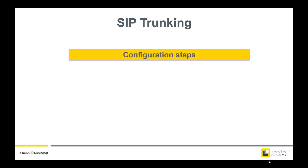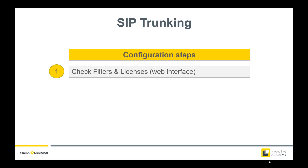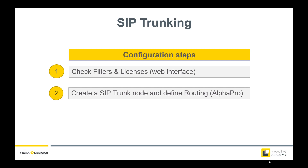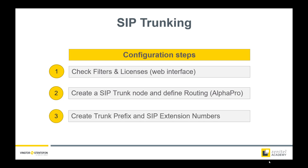There are three major configuration steps. First, we need to check the filter settings and the presence of a valid license — this is done via the web interface of the system. Secondly, a SIP trunk node must be created, and routing must be defined between the intercom application and the SIP trunk node — this is done from the AlphaPro configuration tool. And finally, the prefix to dial out on the trunk must be created. Alternatively, one can create SIP extension numbers making it possible to call without the need of a prefix.